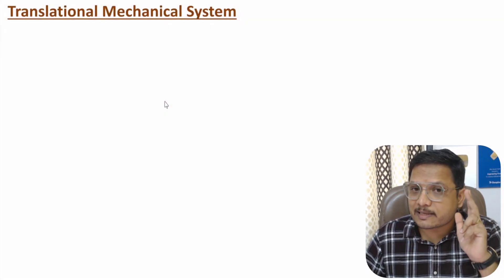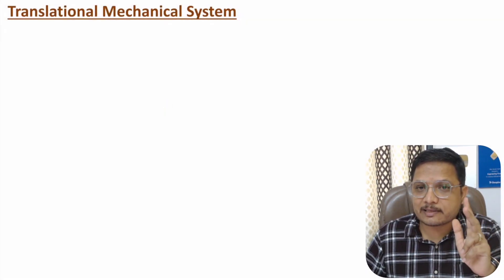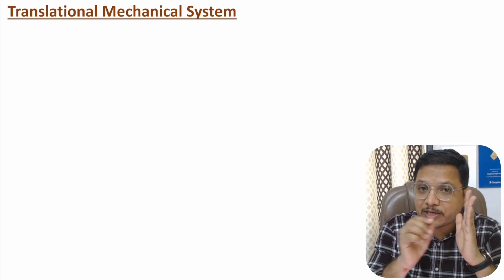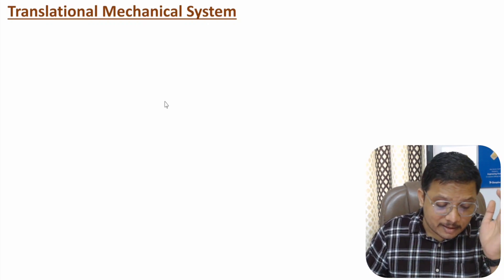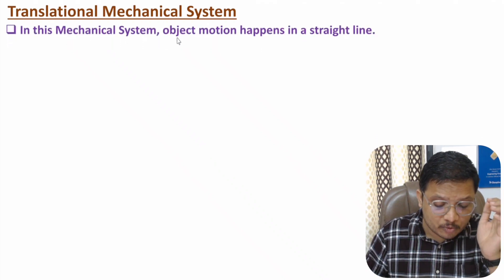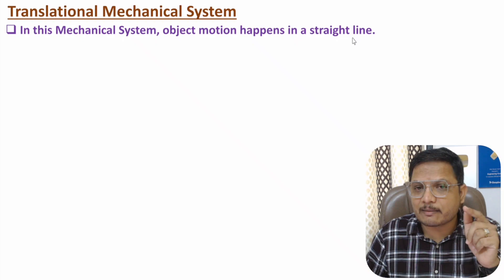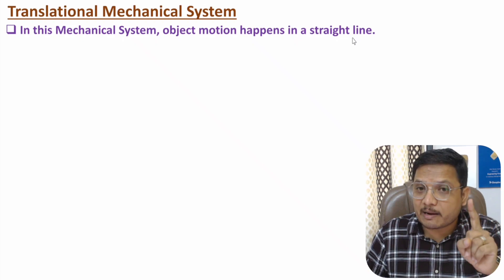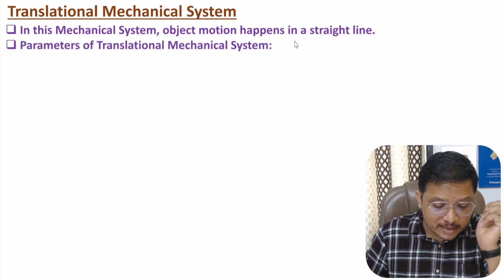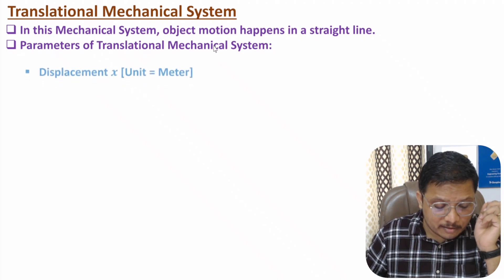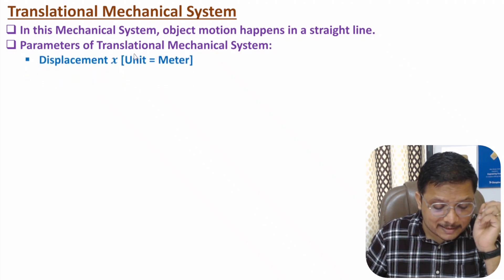In a translational mechanical system, object motion happens in a straight path — that is, in a straight line. Now I'll discuss about the parameters of translational mechanical system. In translational mechanical system we analyze the system with the use of displacement.